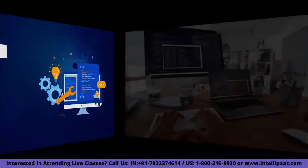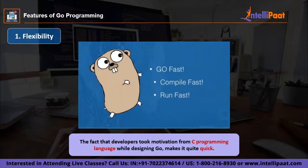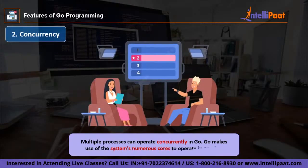The first feature of Golang is that it is quite flexible because of the language design and the fact that developers took motivation from C programming language itself. Also, the design of Go programming brings an extra dimension of versatility with it. Then we have concurrency — Go allows multiple processes to run simultaneously. Arguably, this is Go's most famous and crucial feature. Go utilizes the multiple cores available on the system to function in parallelism. Concurrency makes most sense when separate processes do not rely on each other and where time performance is critical.